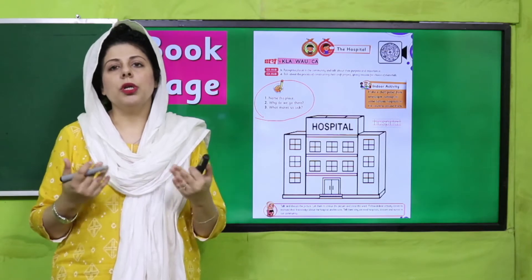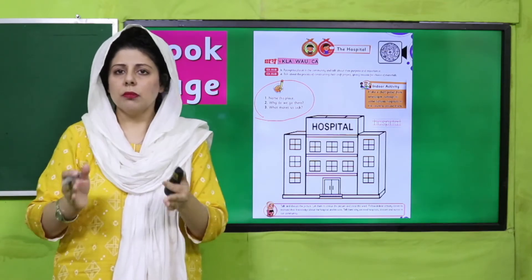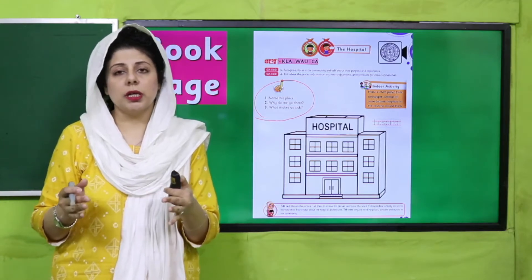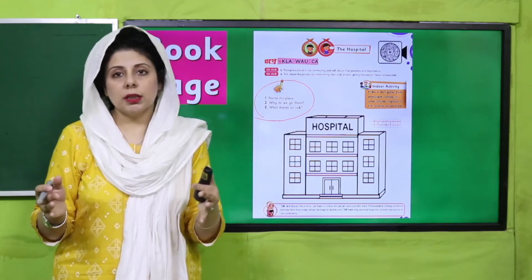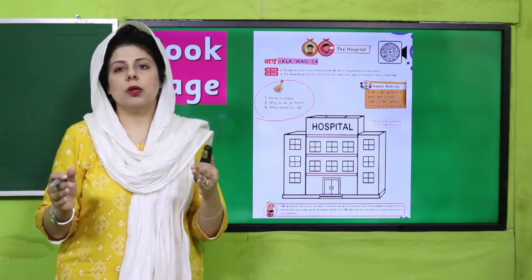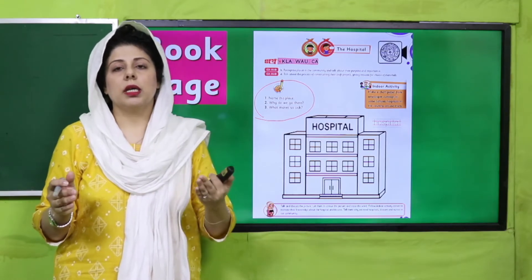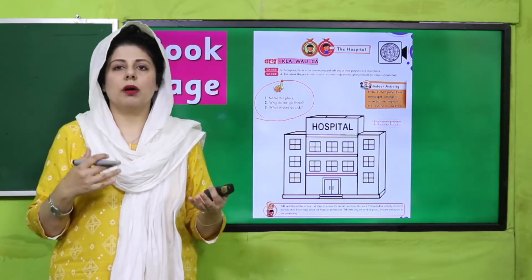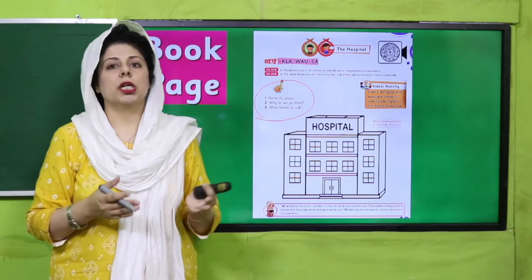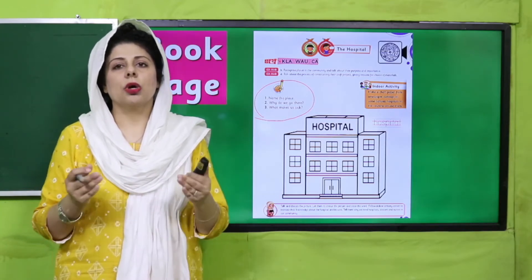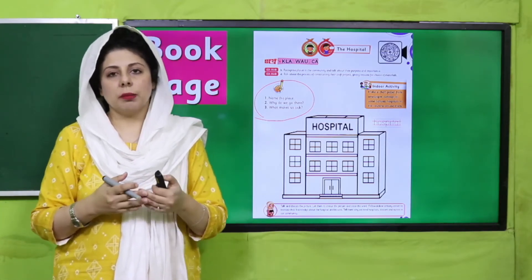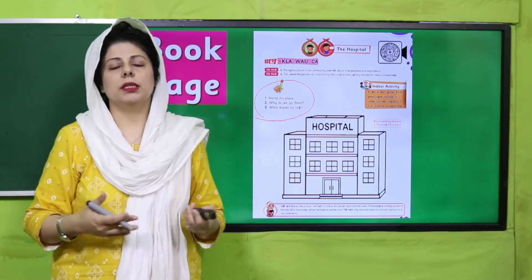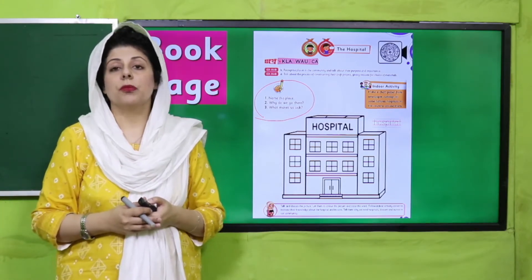Chote bacho ka zehan bahut saari zubanein samajh sakta hai. Sirf focus rakhte hain us awaaz ki jo adaa ki gayi hai us ke upar, taake jo awaaz sunen aur jo awaaz ki shakal ko hum us ke saath connect karen to awazon mein bachhe mix up na ho jayen. Shakal jo hai, tasweer jo hai, woh aahista aahista develop hoti hai.